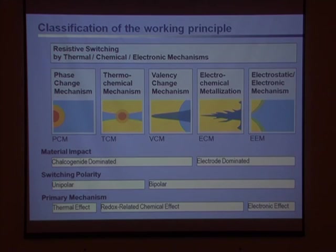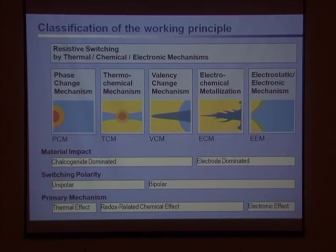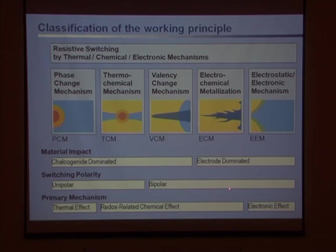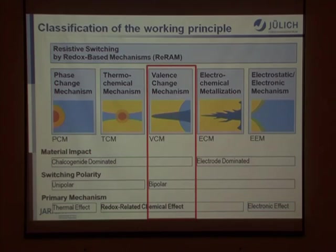Coming to the classification of resistive RAM, we have a broad variety of physical mechanisms which lead to resistive switching. It can be the famous phase change effect, or the thermochemical mechanism which leads to unipolar switching. As we heard in the previous talk, it can be a pure electronic effect or movement of metal ions — the electrochemical metallization effect. But I would like to focus today on what we call the valence change mechanism,